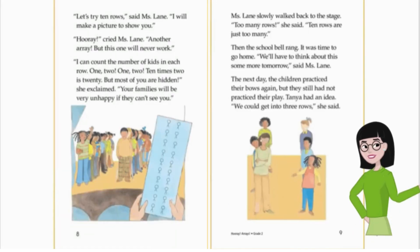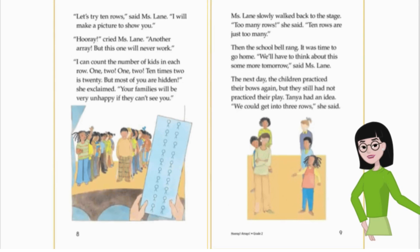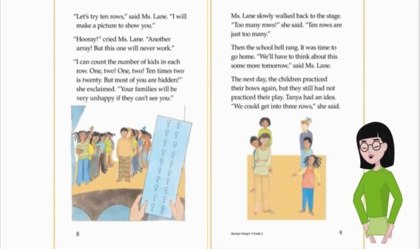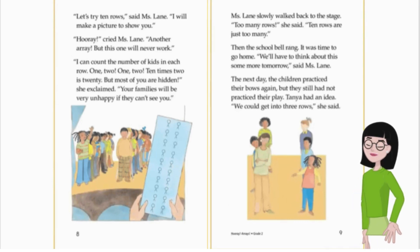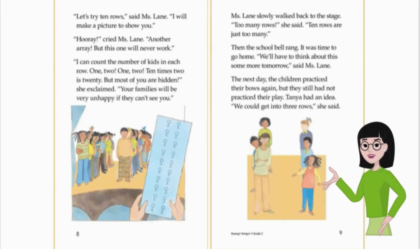'Let's try 10 rows,' said Ms. Lane. 'I will make a picture to show you.' 'Hooray, another array!' cried Ms. Lane. 'But this one will never work. I can count the number of kids in each row — one, two, one, two. 10 times two is 20. But most of you are hidden,' she exclaimed. 'Your families will be very unhappy if they can't see you.' Ms. Lane slowly walked back to the stage. 'Too many rows,' she said. '10 rows are just too many.'